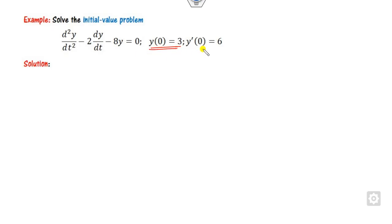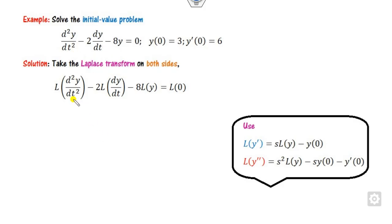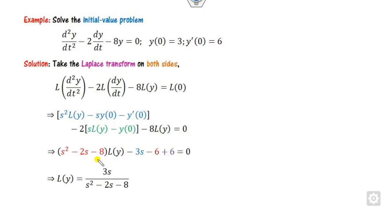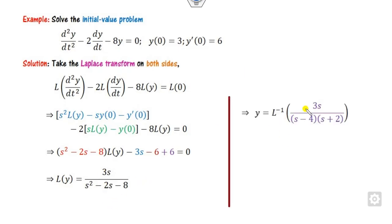Now quickly move to the second example. This is a second-order differential equation, so we need two initial conditions. Again we take the Laplace transformation on each term. For the second derivative we use s-squared L(y) minus s·y(0) minus y-dash(0), and for the first derivative we use the corresponding formula. Substituting y(0) equals 3 and y-dash(0) equals 6, and simplifying, the coefficient of L(y) is s-squared minus 2s minus 8. The value of y is the L-inverse of this.